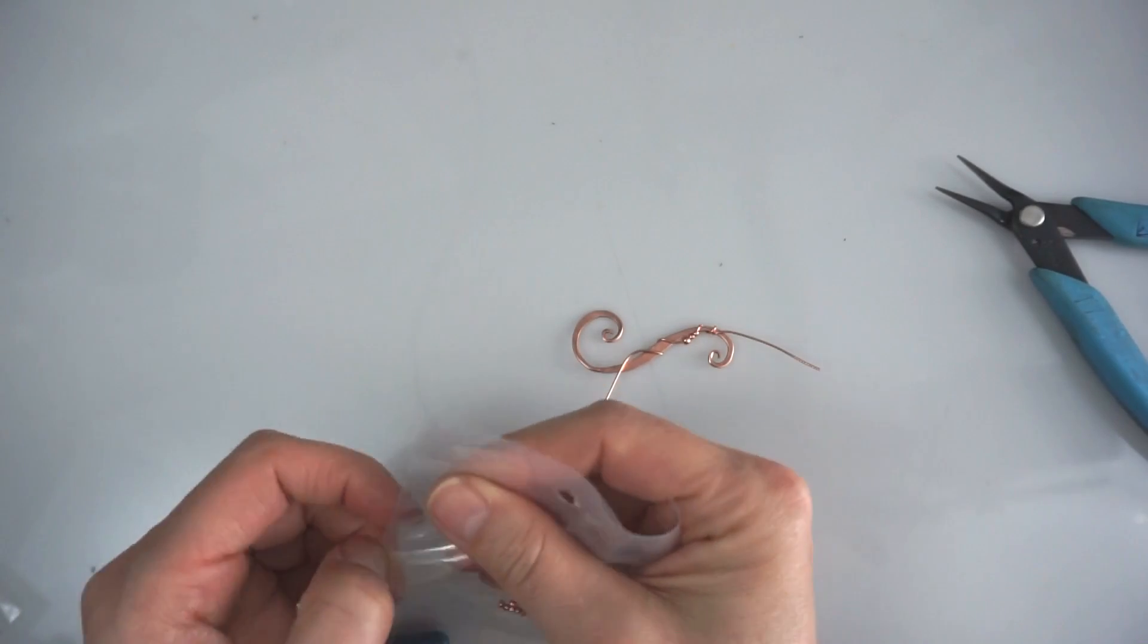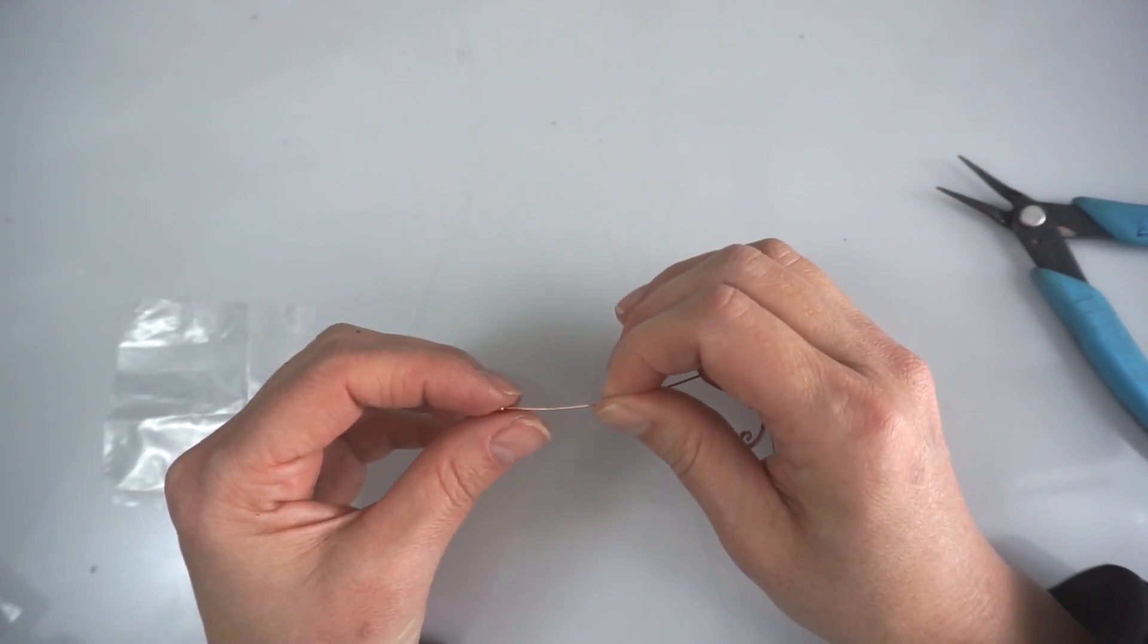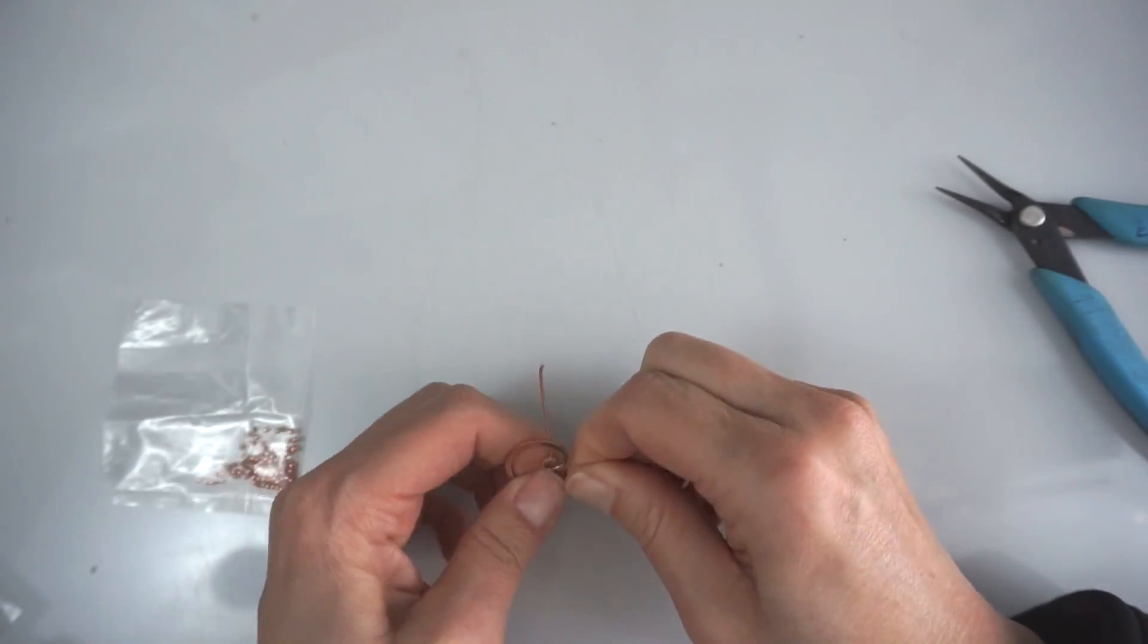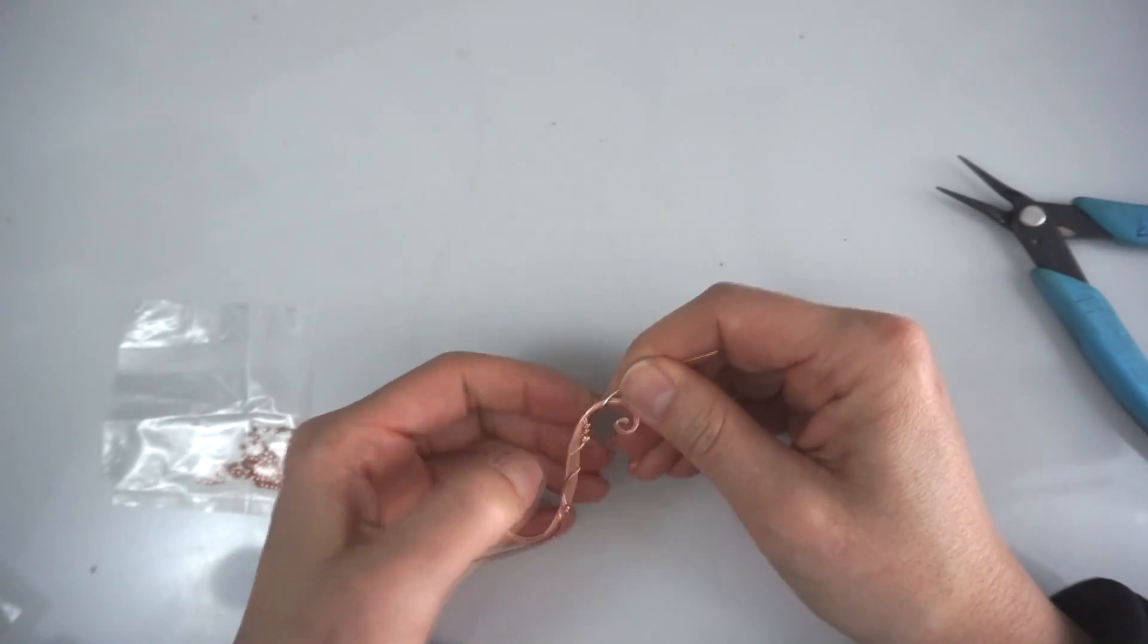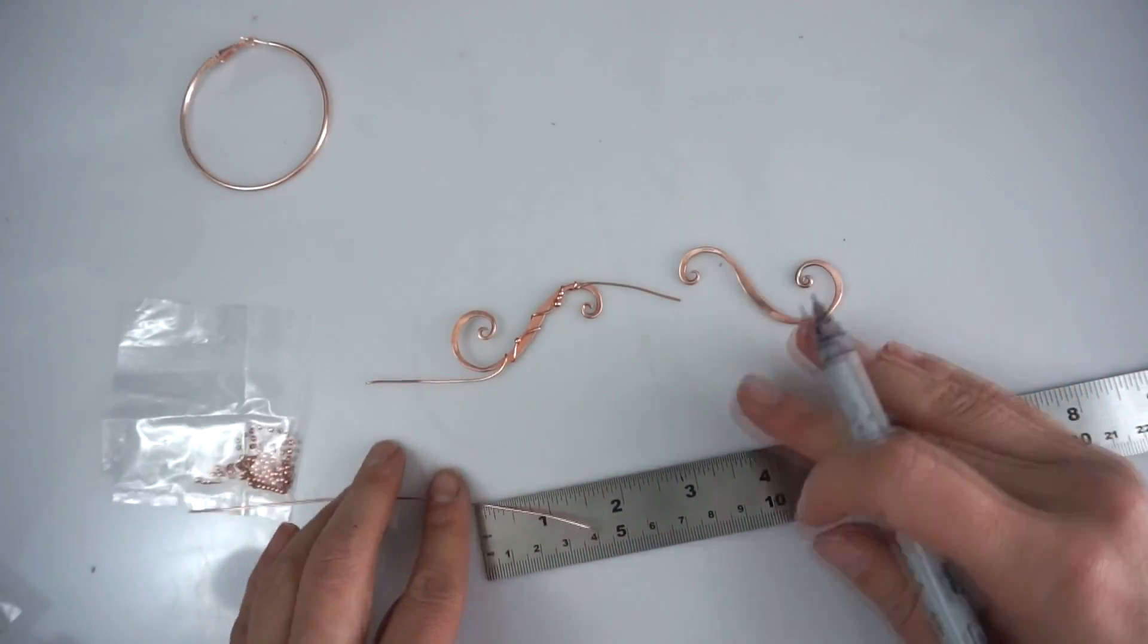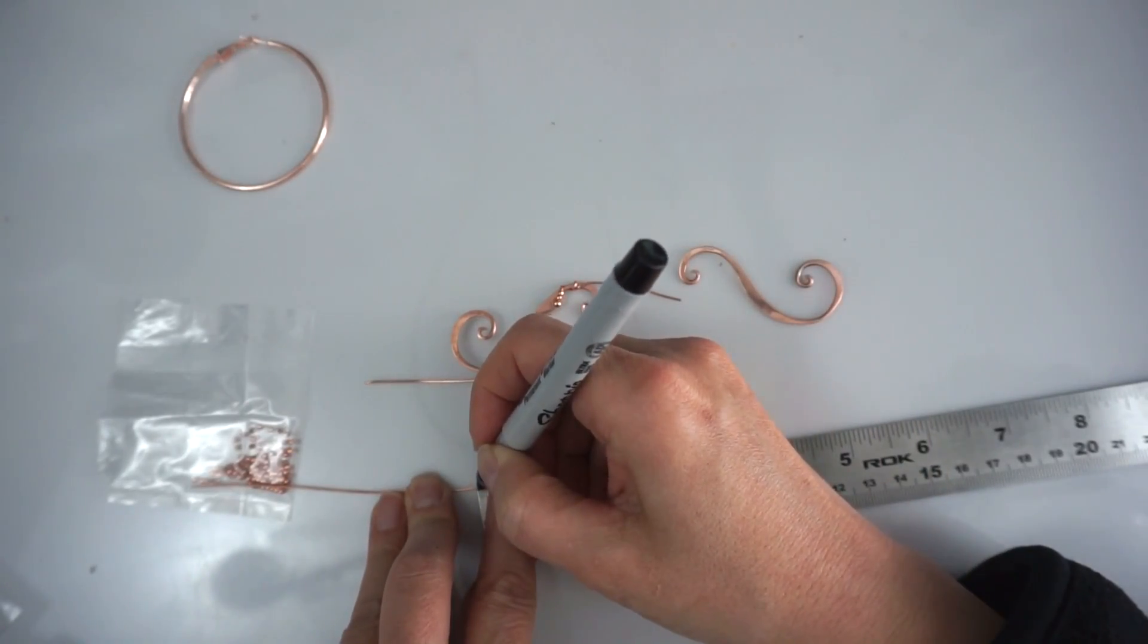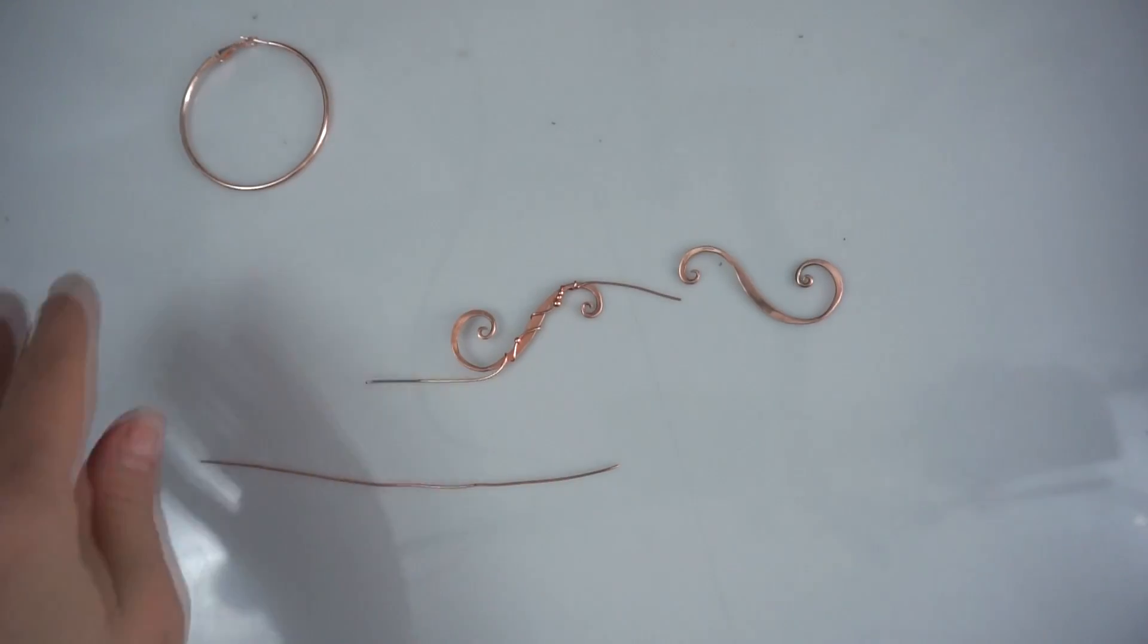I decided to use another cream for the next wave. For the second piece you have to repeat all the steps. Just make sure when you coil your 20 gauge wire around 14 gauge, you create a mirror copy of your first piece.